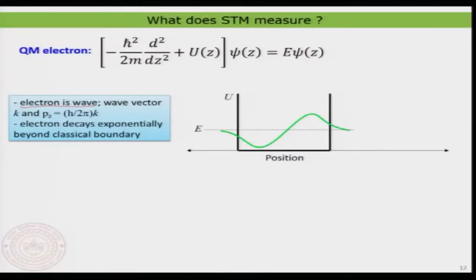We now consider the electron as basically a wave. The total energy of the electron itself is given by the Schrödinger equation, where you have the kinetic energy part, the potential energy part, and the electron itself is defined using a wave function. I have used z as the axis for an interesting reason you will understand shortly.